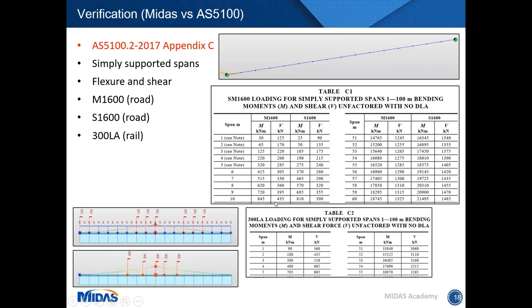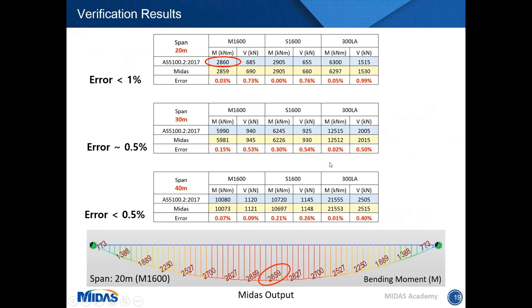I built a 2D line beam model and ran a single lane of these loads, then compared flexure and shear. The error was quite low — almost 0.5% or less as span increases. Based on this verification study, Midas gives quite good results and is in agreement with Australian Standard values.